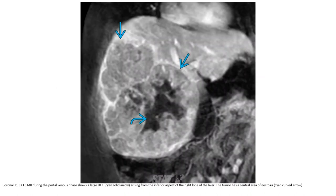On T1C+ hepatobiliary agent image during the portal venous phase, a large HCC arising from the inferior aspect of the right lobe of the liver is seen. The tumor has a central area of thrombosis.